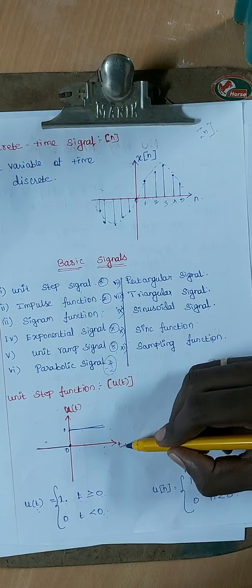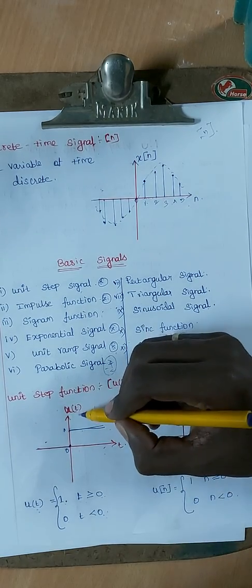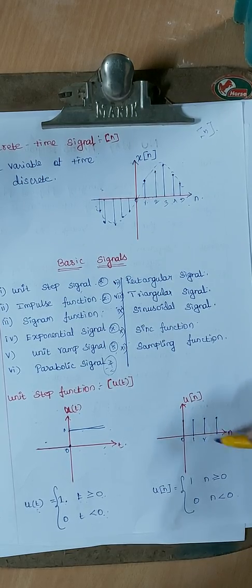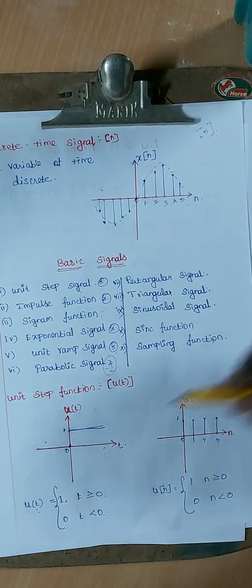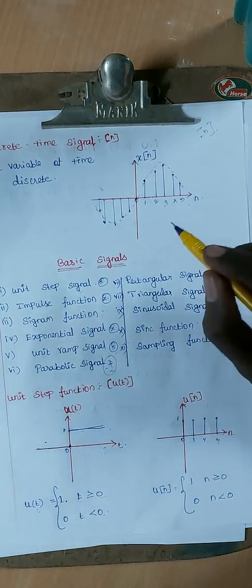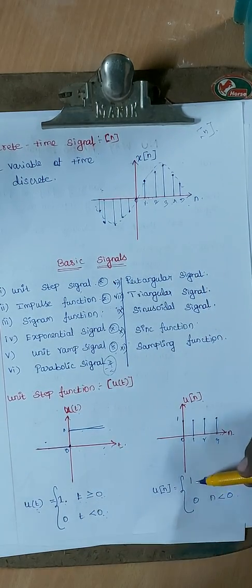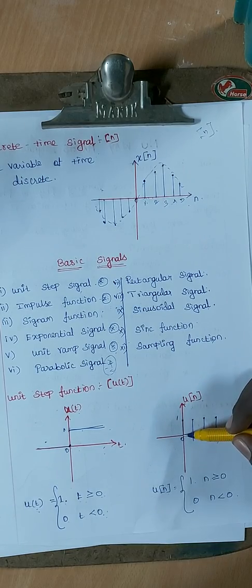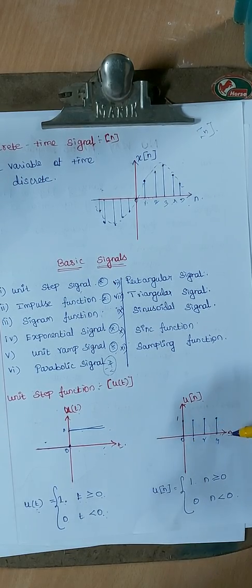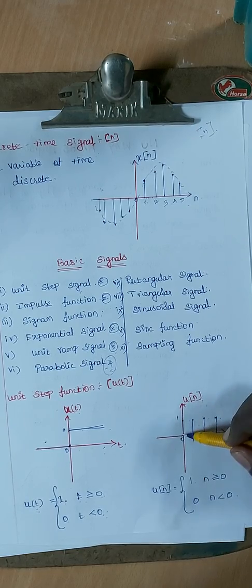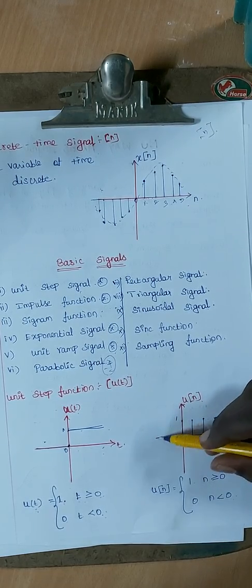For the discrete time version, u(n) is written with square brackets. When n is greater than or equal to 0, the amplitude is 1. So u(n) equals 1 for n ≥ 0, and u(n) equals 0 for n < 0.